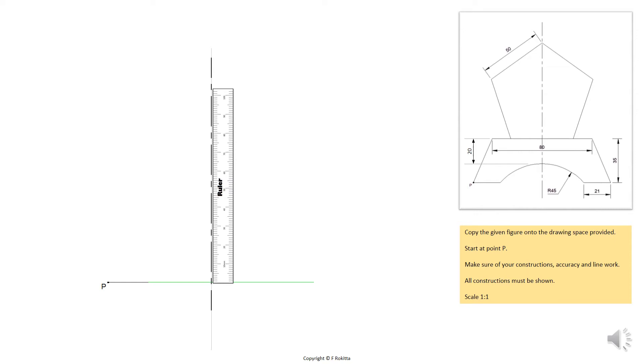Continue this drawing by aligning your ruler with the centre line. Measure the height of 35 mm as indicated in the 2D schematic. This will give us the height of the base of our model. Draw a light construction line at the height of 35 mm as shown here.